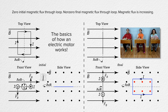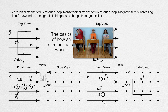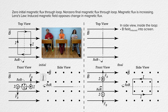That means that according to Lenz's law, there must be an induced magnetic field which opposes that change in magnetic flux. Inside the loop, the induced magnetic field will be into the screen in the side view, again to oppose the increase in the magnetic flux.